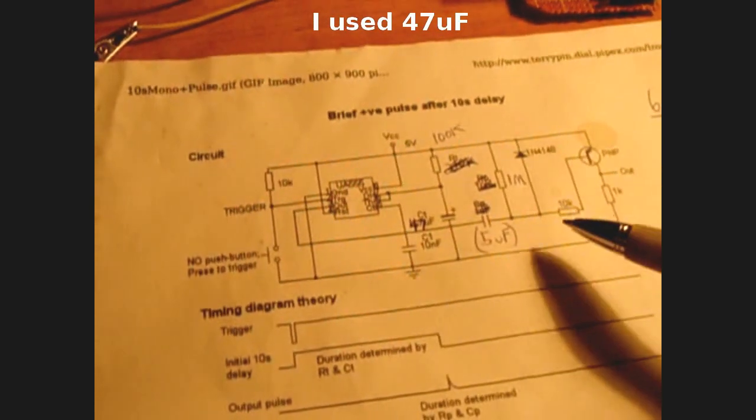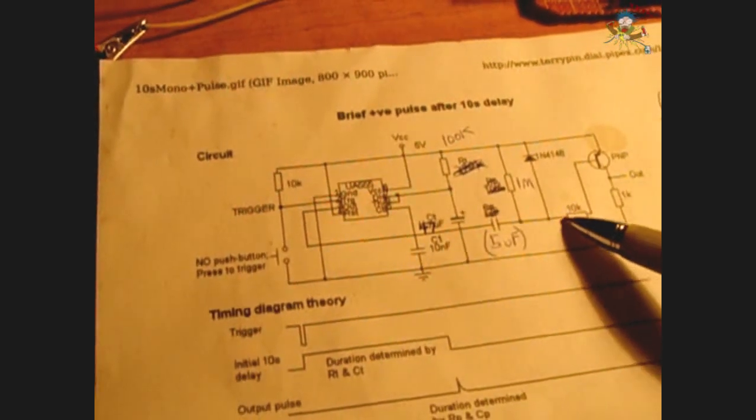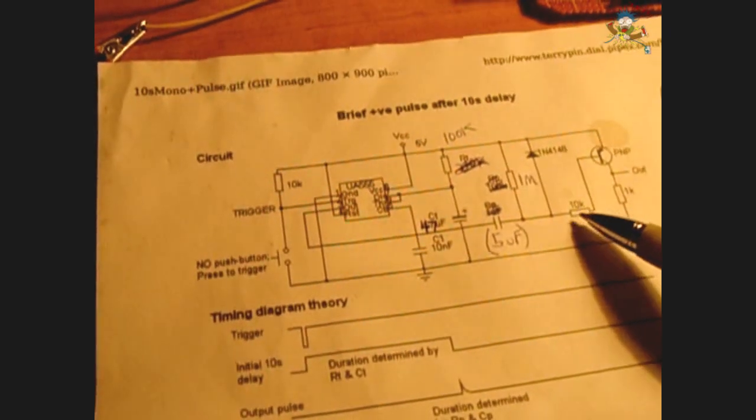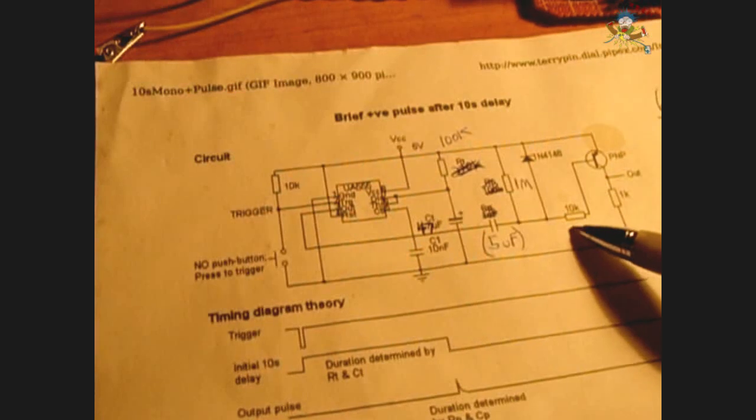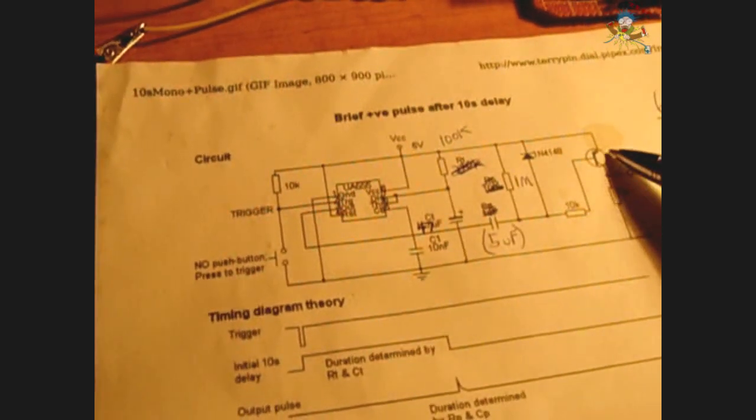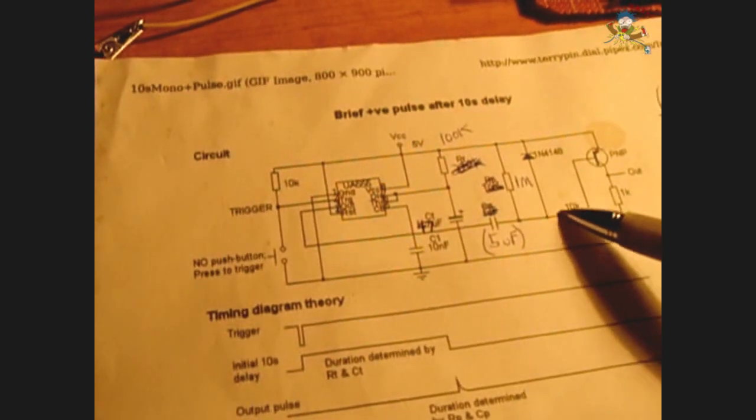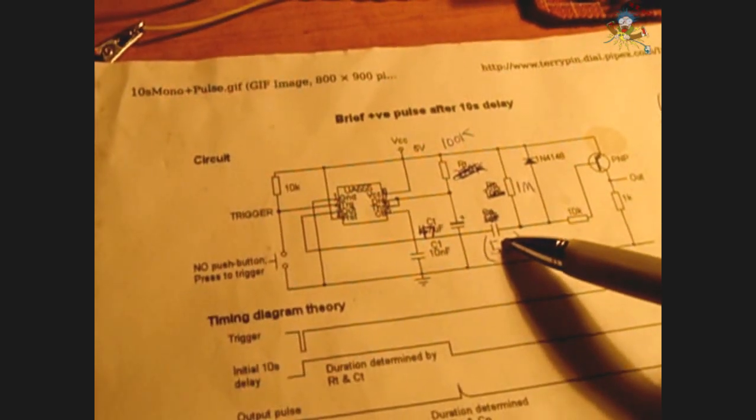Now you can also increase the duration of the pulse by putting a higher value resistor right here. I actually use a 15k. You can go to 20, 27, 36, and as you increase that, it's going to keep that pulse a little longer. So play around with this value for a longer pulse and this capacitor value.